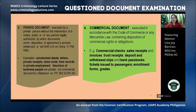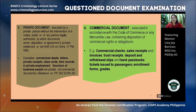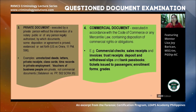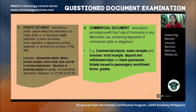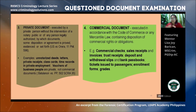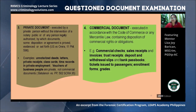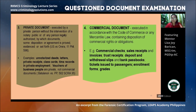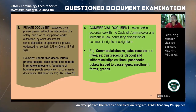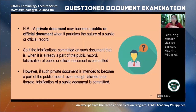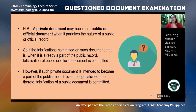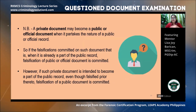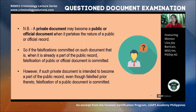Commercial documents are executed in accordance with the Code of Commerce or any mercantile law, containing disposition of commercial rights or obligations. Examples include commercial checks from banks, sales receipts, trust receipts, deposits and withdrawal slips, and passbooks. As long as it is related to commerce, finances, or money, it can be considered a commercial document. A private document may become a public or official document when it partakes the nature of a public or official record.